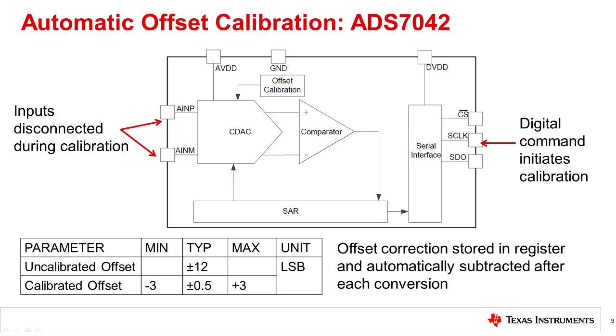This correction can significantly reduce offset error. For example, the ADC7042 typical offset is reduced from plus or minus 12 LSB to plus or minus one half LSB through calibration. Finally, it is important to note that this automated calibration corrects for offset error, but does not correct for gain error.